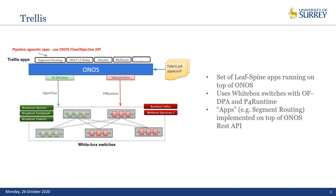In combination with white box switches running OFDPA and P4 runtime, Trellis provides applications you'd typically see in a service provider environment — for example, segment routing or multicast replication. Moving that forward into a UPF environment within a 5G core, this runs on top of a number of different hardware vendors — typically Barefoot Tofino and Mellanox Spectrum. They provide an abstraction into ONOS that enables me to write the application once and deploy across multiple switch fabrics, taking fabric.p4 and deploying onto any white box switch.